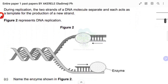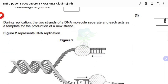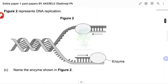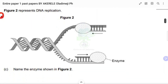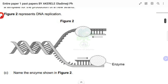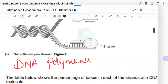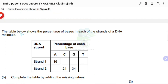The next question: during replication the two strands of a DNA molecule separate and each acts as a template for production of a new strand. Name the enzyme shown in the diagram. The answer is DNA polymerase.